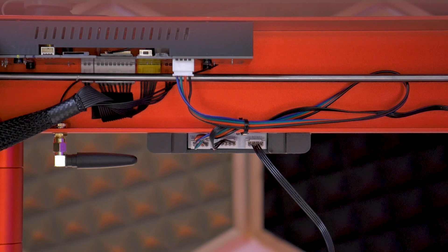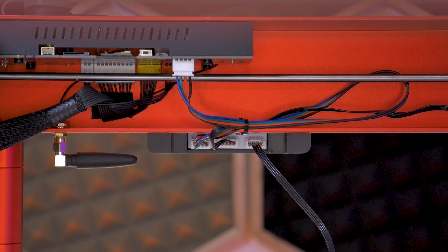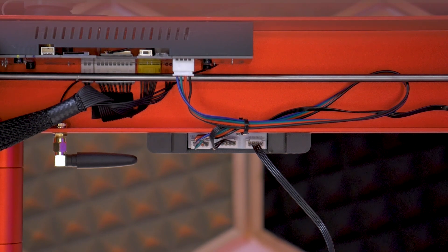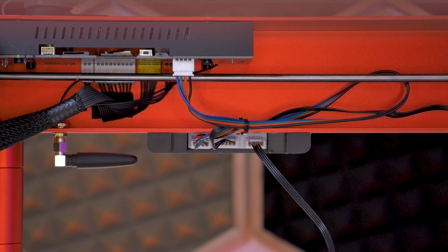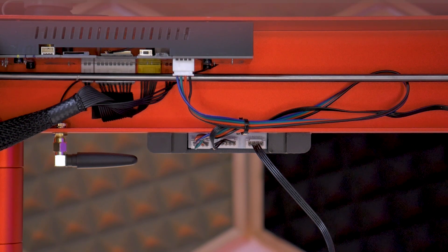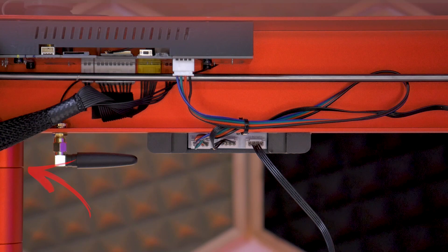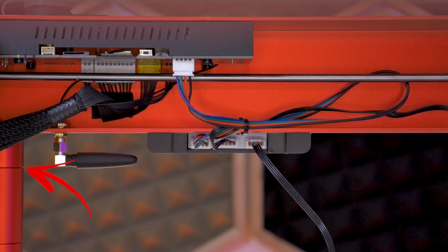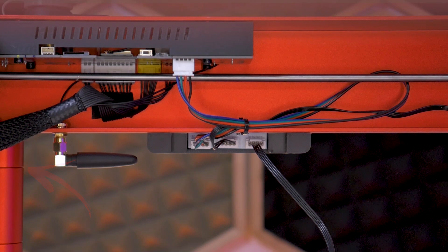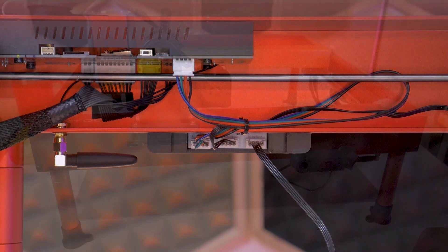You can also see in this view that in the future if you ever have to unplug any of these connectors they're still accessible under the frame. Another thing you can see is that the switch does not protrude lower than the first leg extension, so if you don't have any of the other extensions on the machine you'll still have clearance for the switch.